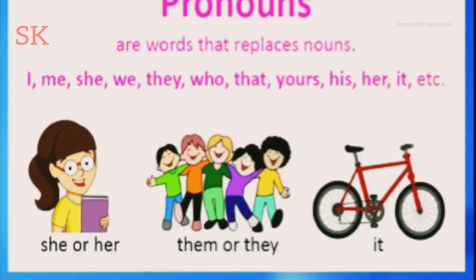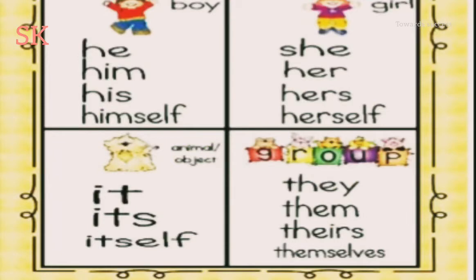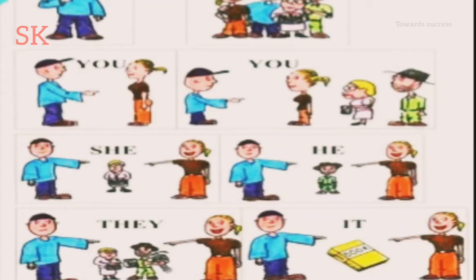On the screen you can see examples of pronouns. For a boy we use he, him, his, himself. For a girl we use she, her, hers, herself. For an animal or an object we use it, its, or itself.